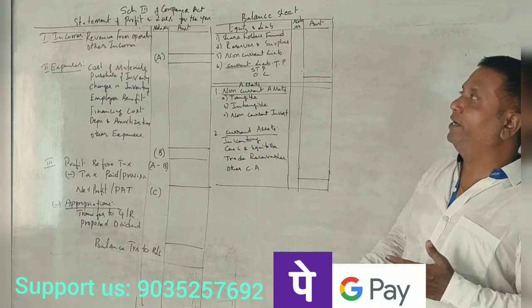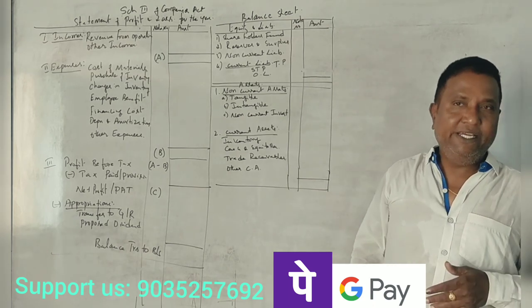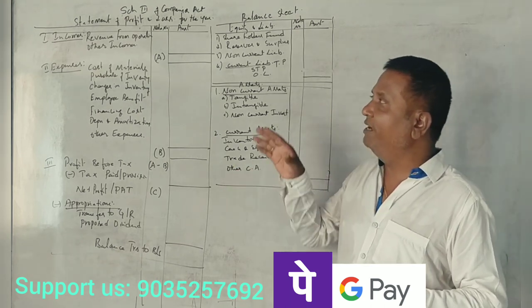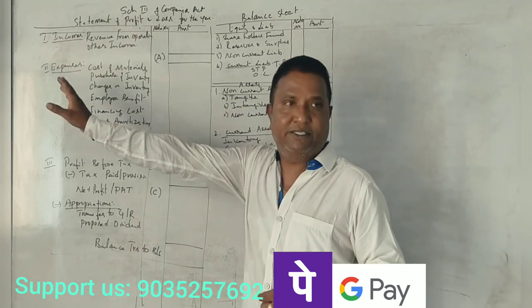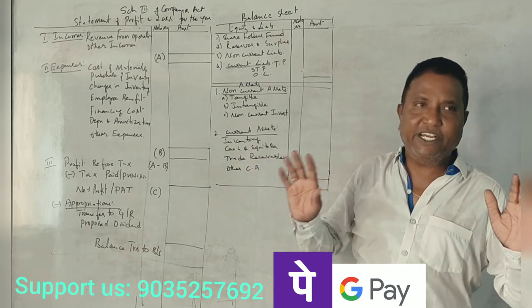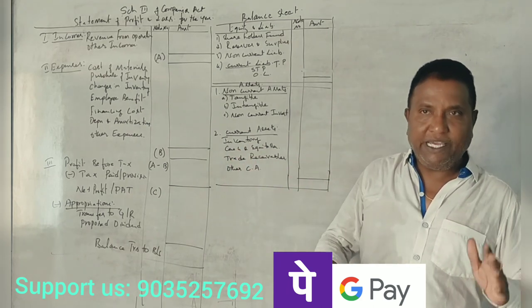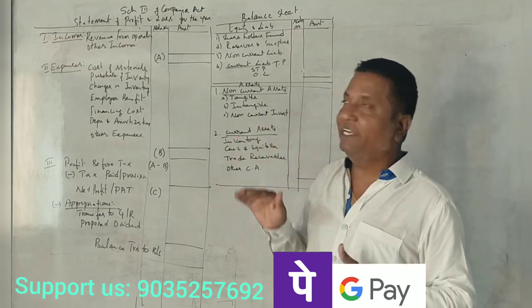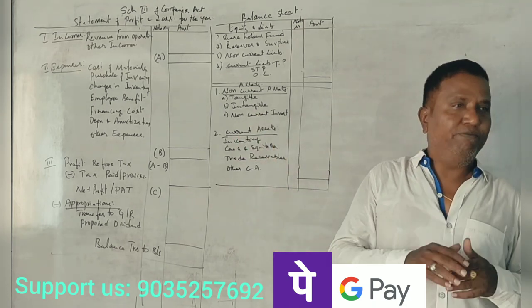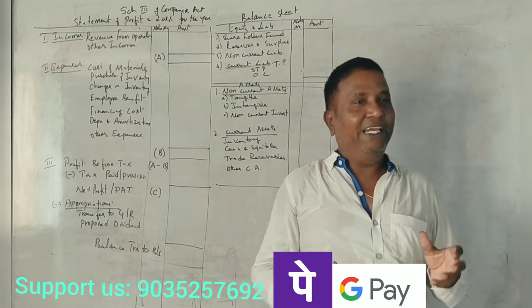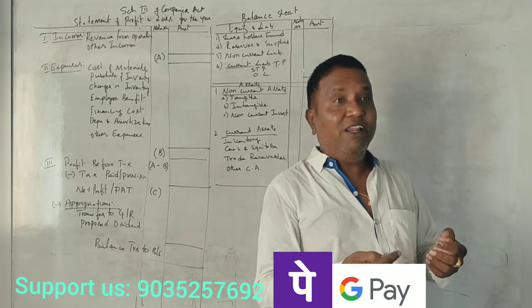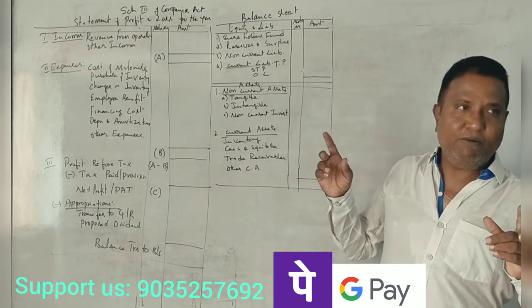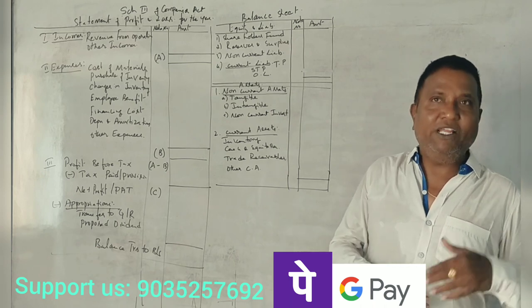At the end of the year, in the performance section, we look at Income and Expenses. Income includes Revenue from Operations — that is, your sales. Revenue from Operations represents your sales figure.